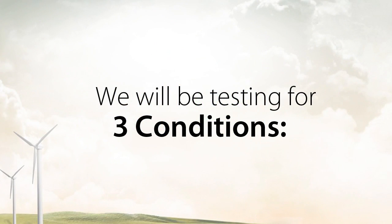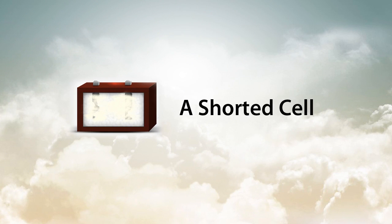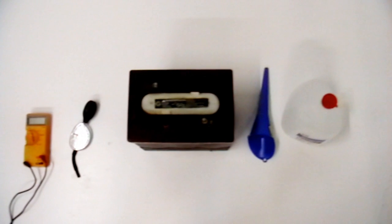We will be testing for three conditions: physical exterior damage, a short cell, and an open cell. For these tests you will need a voltmeter and a hydrometer. We will demonstrate how to use each of these tools.